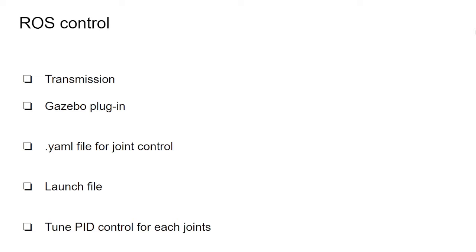Then you need to create a launch file to spawn not only your robot but also the configuration of your joints. In the configuration file we're going to put a PID controller that is not yet tuned. So the last step is to tune the PID control — which stands for Proportional, Integral, and Derivative control — for each joint, and we're going to use the RQT Reconfigure GUI for tweaking those values.